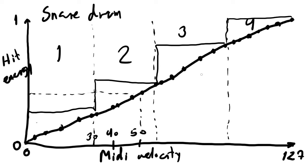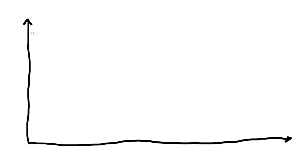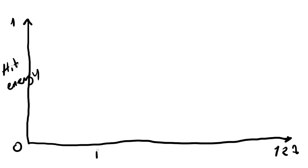What we have done in an experimental version of DrumGizmo is that we have transformed the fixed velocity groups to floating velocity groups. Let me just demonstrate what I mean by that. We have the exact same setup here — hit energy and MIDI velocity — the exact same scenario, with a lot of hits spread out.